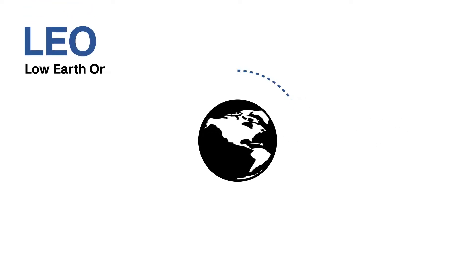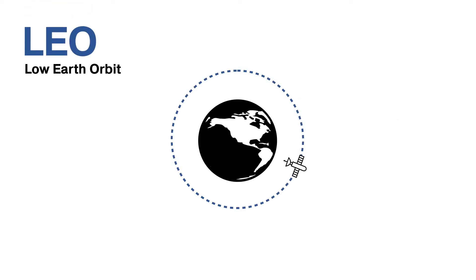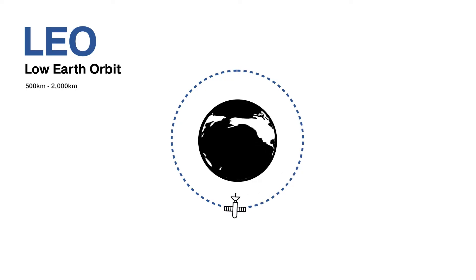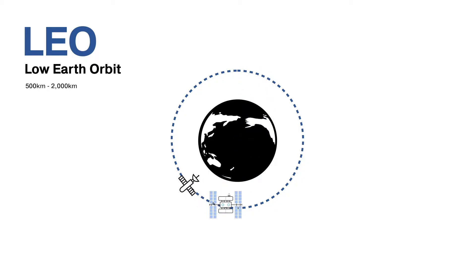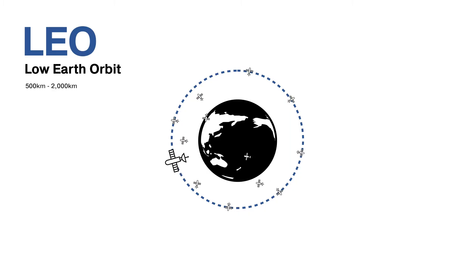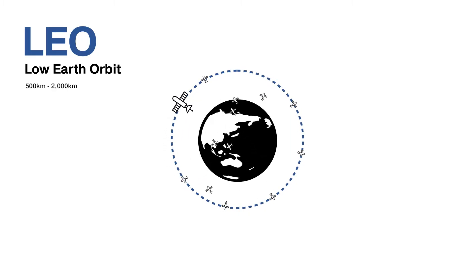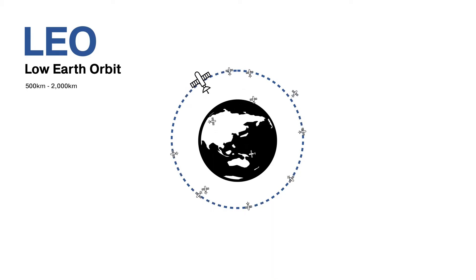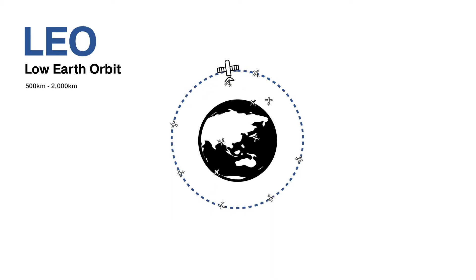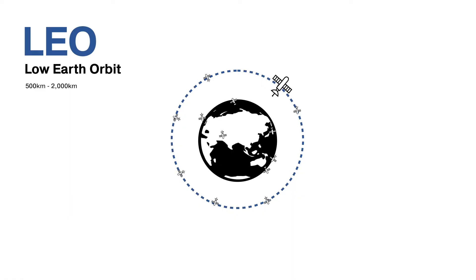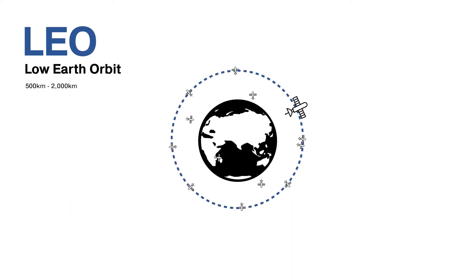LEO, or Low Earth Orbit, is at an approximate altitude of 500 to 2,000 kilometres from the Earth's surface. It's in Low Earth Orbit where you'll find the International Space Station. LEO is densely populated, with thousands of satellites in operation, primarily for imaging, scientific purposes, and telecommunication. Low Earth Orbit satellites are smaller and cheaper, but you need a lot of them to work sufficiently with a complex ground network. And its closeness to the Earth offers low latency.